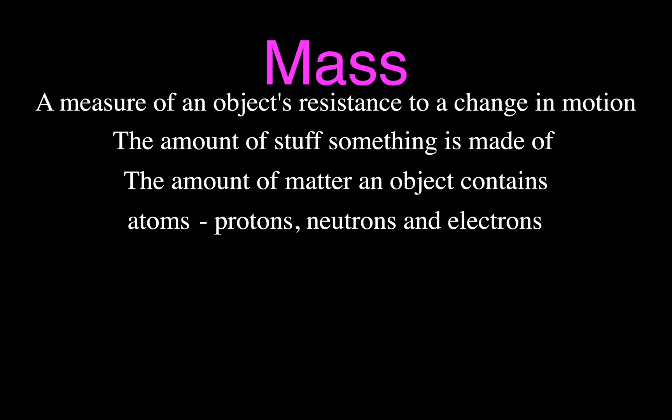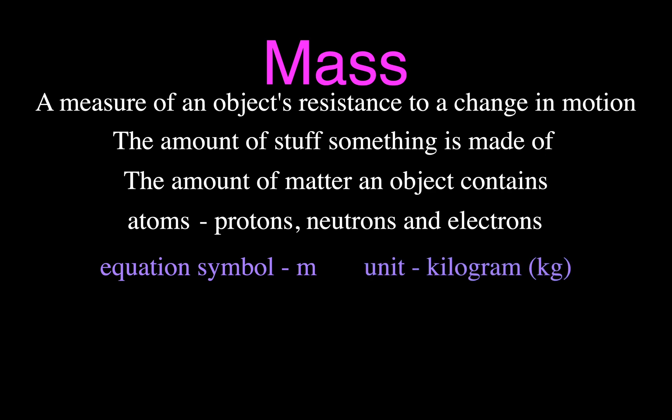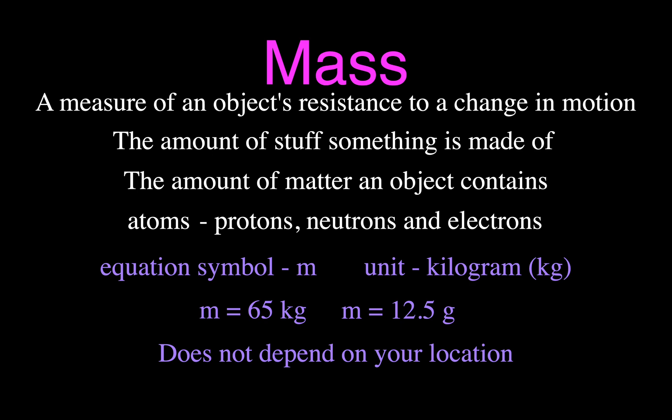So the more massive you are, the more protons, atoms, neutrons, and electrons you have. When we write mass in an equation, we use the equation symbol m. The unit is the kilogram. Some people think the base unit for mass is the gram, but in science — chemistry and physics — the base unit for mass is the kilogram. For example, m equals 65 kilograms, or m equals 12.5 grams. A lot of times in school we have only grams, but when you put values into equations, they need to be in kilograms. And mass does not depend on your location — wherever you go, you always have the same amount of mass.